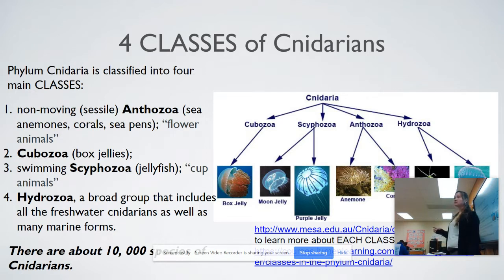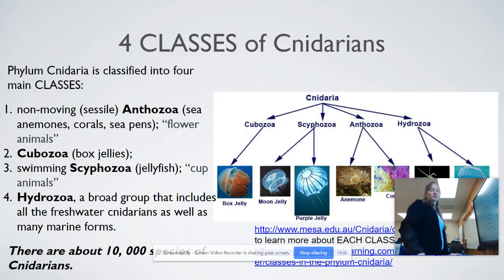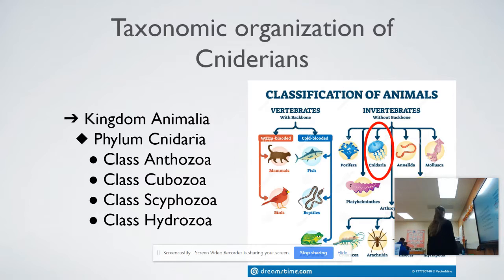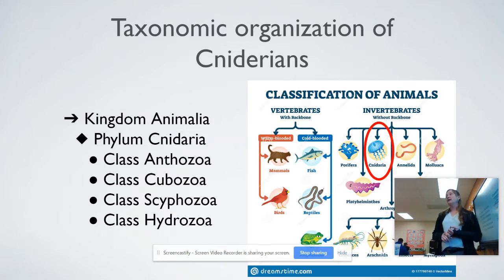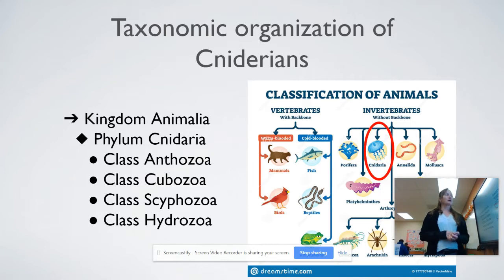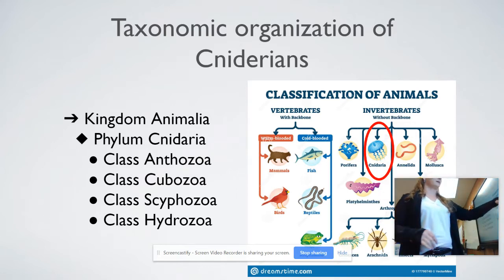If you've ever been swimming in the ocean, you've probably come across some of these here in Florida. You need to know the taxonomic organization of Cnidarians: Kingdom Animalia, Phylum Cnidaria, and then the four classes — Anthozoa, Cubozoa, Scyphozoa, and Hydrozoa.